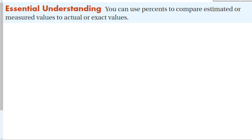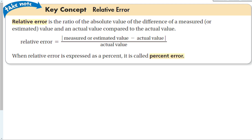Our next essential understanding is that you can use percents to compare estimated or measured values to actual or exact values. This is called relative error. Relative error is the ratio of the absolute value of the difference between a measured or estimated value and an actual value, compared to the actual value. So error equals |measured minus actual| divided by actual. When relative error is expressed as a percent, it's called percent error.